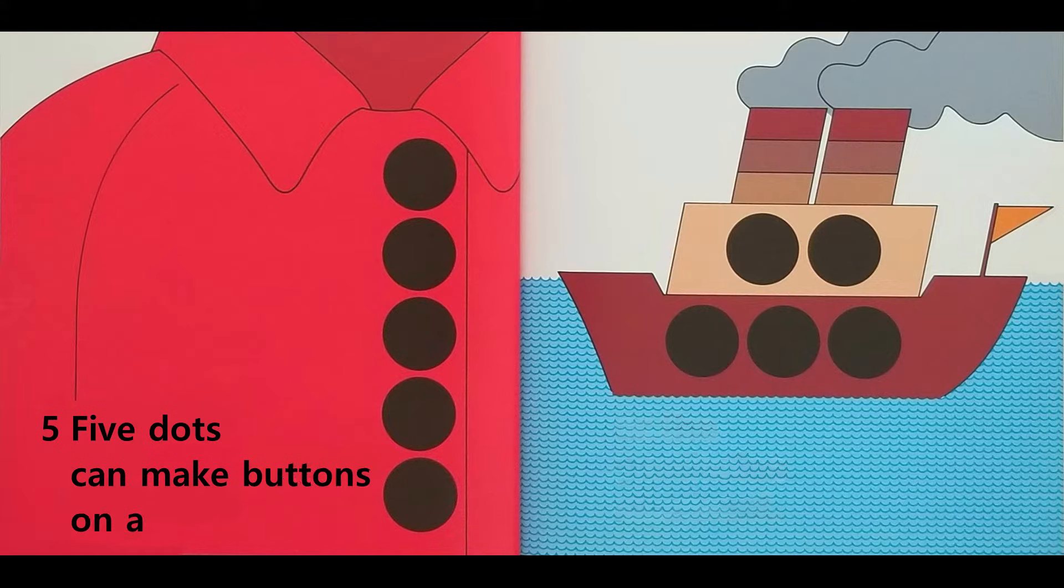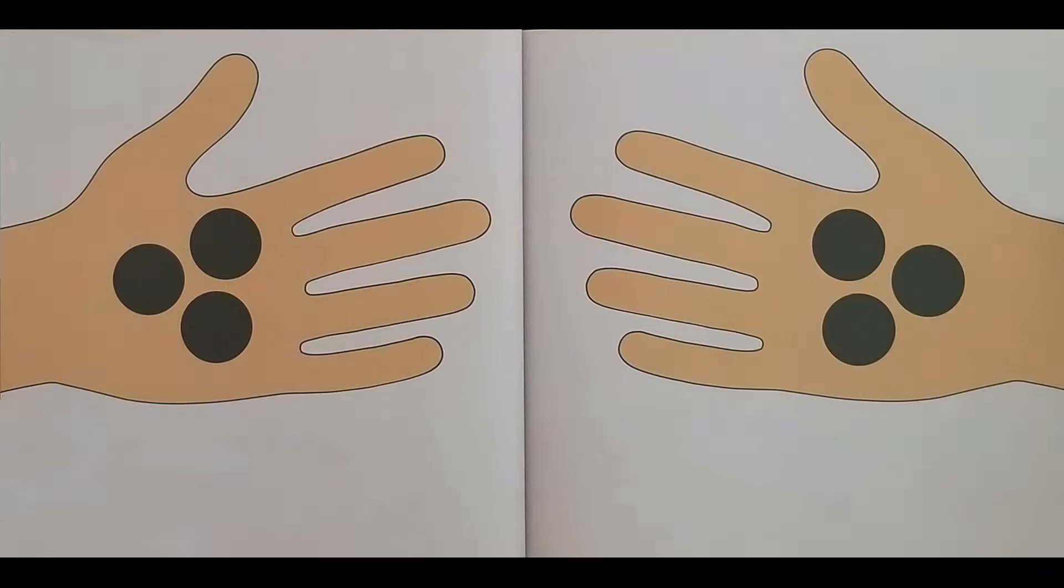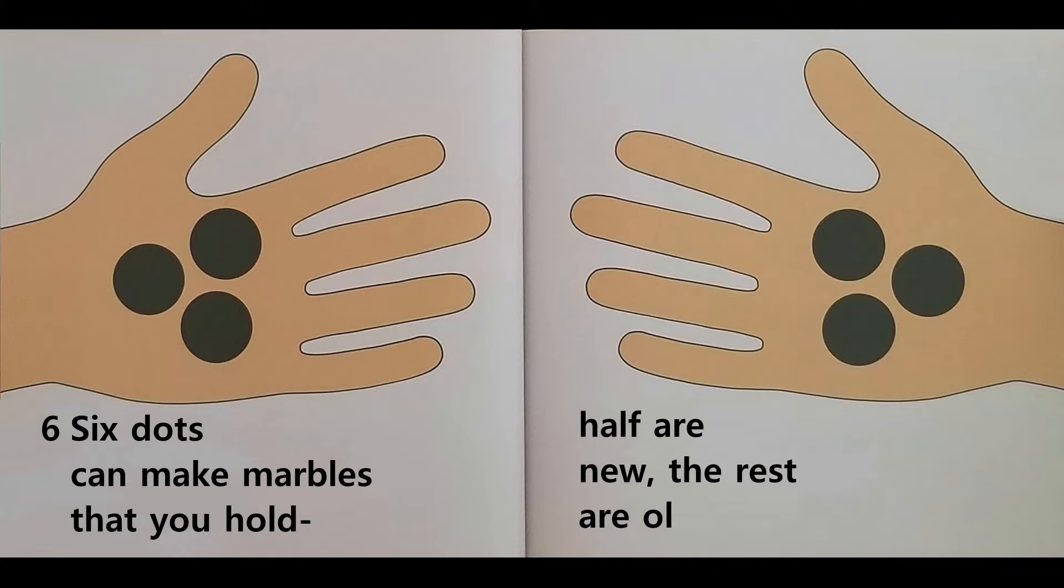Five dots can make buttons on a coat or the portholes of a boat. Six dots can make marbles that you hold. Half are new, the rest are old.